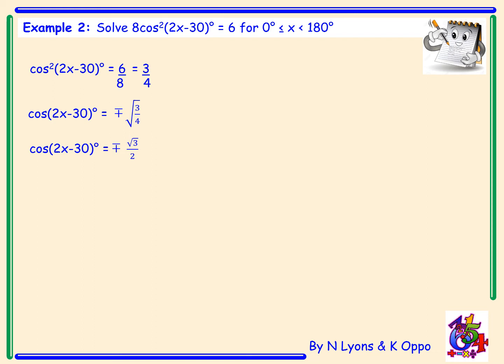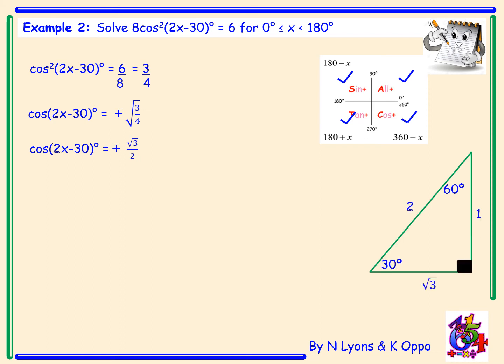Just like in the last question, we draw a CAST diagram, and again we're looking for an angle in all four quadrants because we're looking for cos equal to plus or minus root 3 over 2. This is an exact value, so drawing the exact value triangle, we're looking for an angle with adjacent root 3 and hypotenuse 2, which is 30 degrees.